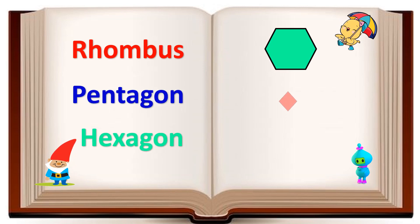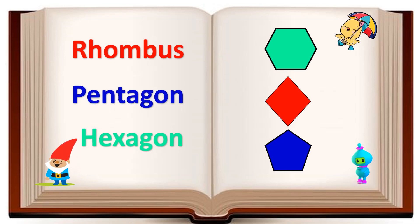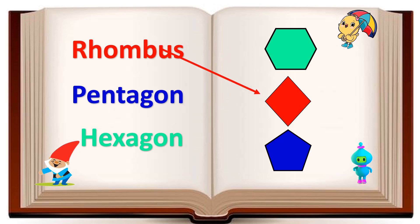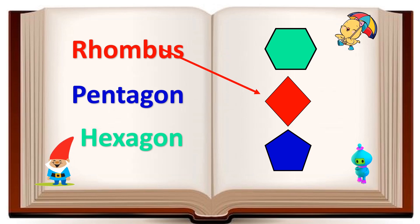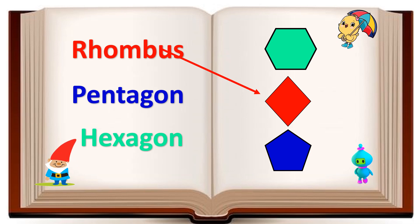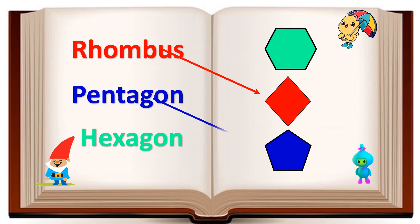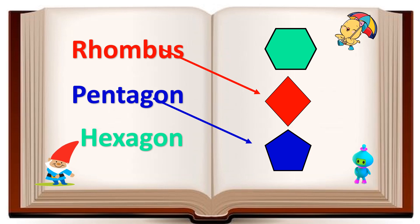Let's match the spelling of rhombus with its correct picture. Yay, good job! Now we will match the spelling of pentagon with its correct picture. Well done.